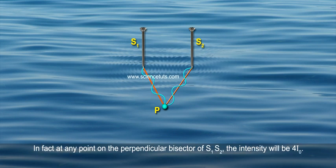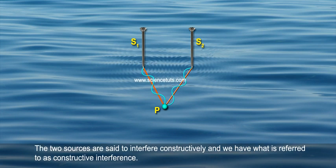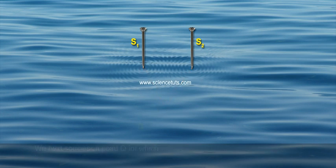In fact, at any point on the perpendicular bisector of S1, S2, the intensity will be 4I0. The two sources are said to interfere constructively and we have what is referred to as constructive interference.